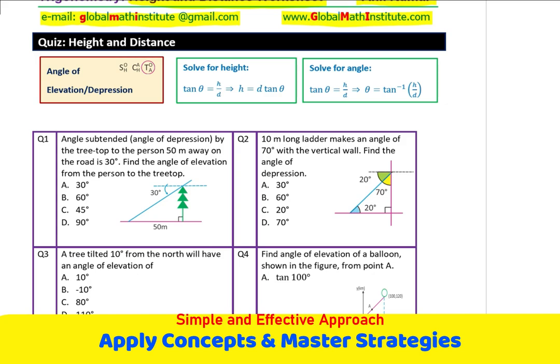So, a term which you are using is angle subtended, which is same as the angle of depression. Now, many questions use these terms, which are not familiar with many students and therefore, it is a very important question. So, if the angle of depression is 30, then the angle of elevation should also be 30. And therefore, answer A is correct, perfect.